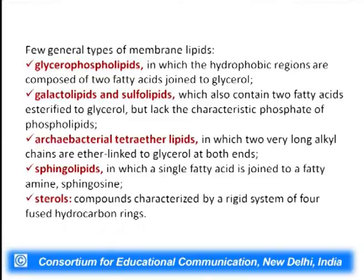Membrane lipids are broadly classified into five general types. First, glycerophospholipids, where the hydrophobic regions are composed of two fatty acid chains joined to a glycerol backbone. Second, galactolipids or sulfolipids, with two fatty acid chains esterified to glycerol but lacking a phosphate group. Third, archaebacterial tetraether lipids, with two very long alkyl chains ether-linked to glycerol at both ends. Fourth, sphingolipids, where a single fatty acid is joined to sphingosine. Fifth, sterols, characterized by a rigid system of four fused hydrocarbon rings.